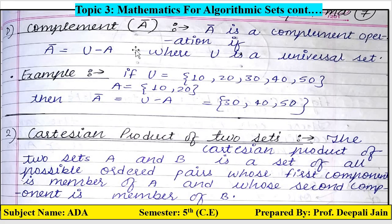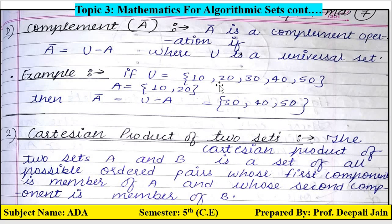Fourth operation is complement. Ā (A bar) is the complement operation. Ā = U − A, where U is the universal set. For example, U = {10, 20, 30, 40, 50} and A = {10, 20}. You subtract A's elements from the universal set — 10 and 20 are common and get cut. The remaining elements are {30, 40, 50}, so Ā = {30, 40, 50}. That is the answer of the complement.